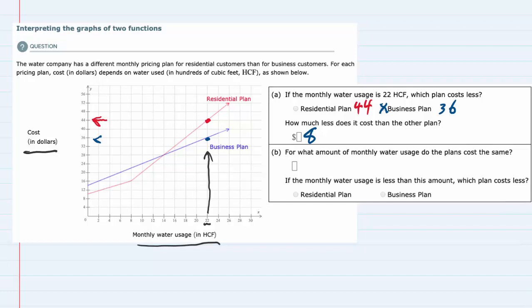It asks for what usage, so if we go down, we'll see that the usage here is 14. So whenever they both use 1400 cubic feet, then the price will be the same.